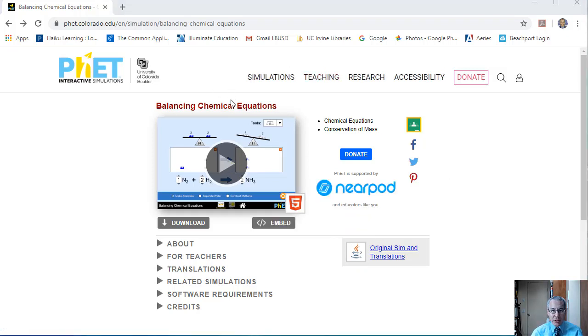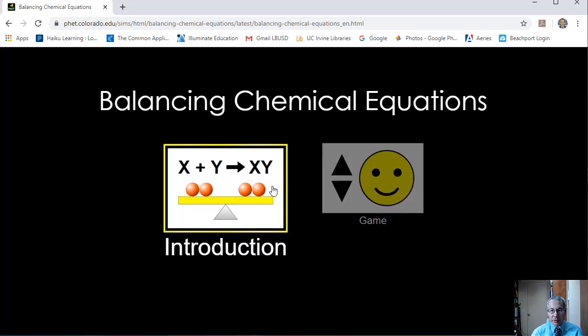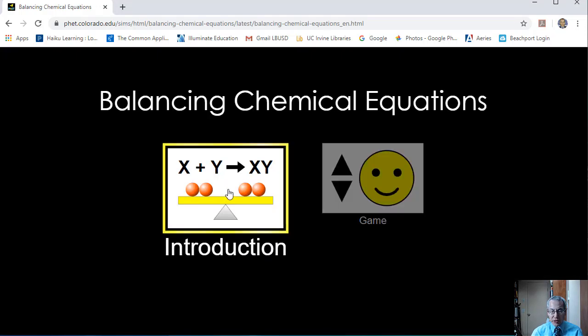When you get to the web page, it will look like this. Just click on the play button. I'm going to do an introduction. So you have this blank screen. There's only three choices here at the bottom. The choices are make ammonia, separate water, combust methane. I'll just do the first one first.